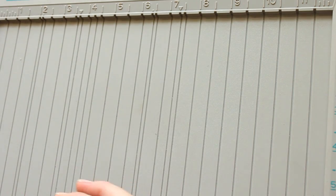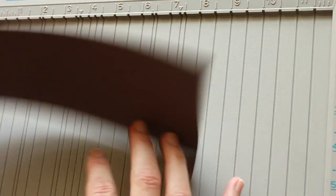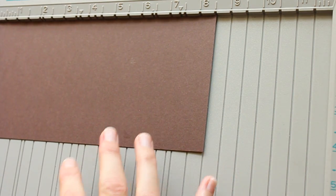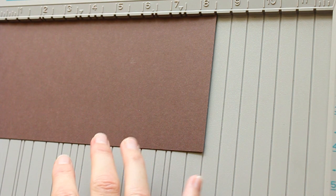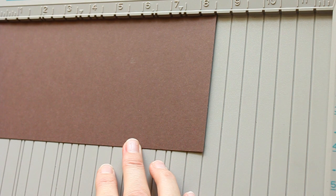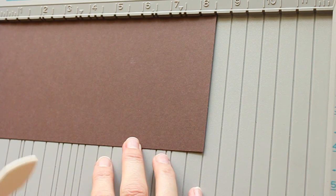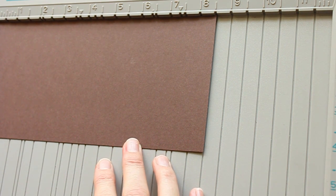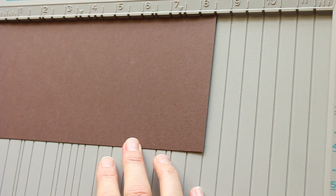To begin with, you need a card base. If you want a square card, start with a four and a quarter by eight and a half piece of cardstock. If you want a regular size card, start with five and a half by eight and a half. Both times you'll have to score at two and an eighth and six and three eighths.